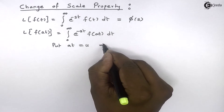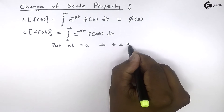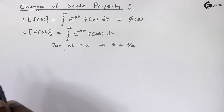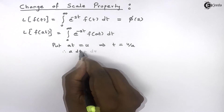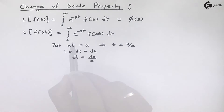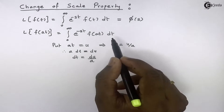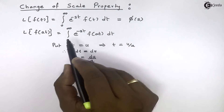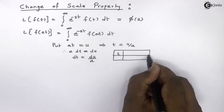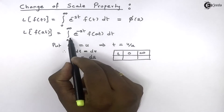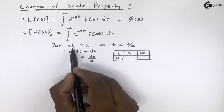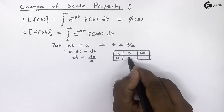With the substitution at = u, t becomes u upon a. Taking the derivative on both sides gives a dt = du, that is dt = du upon a. Now as we change the integration from the t domain to the u domain, the limits must also change. When t is equal to 0, u becomes 0 times a, which is 0.